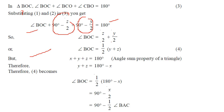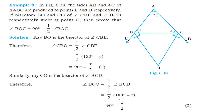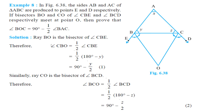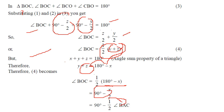So angle BOC equals y plus z by 2. We also know from the angle sum property of triangle ABC that x plus y plus z equals 180 degrees, so y plus z equals 180 minus x. Substituting, BOC equals (180 minus x) by 2, which is 90 minus x by 2, and x is simply angle BAC. Hence proved.